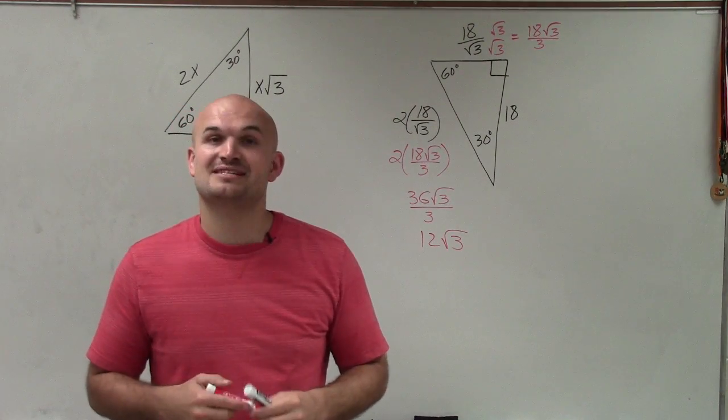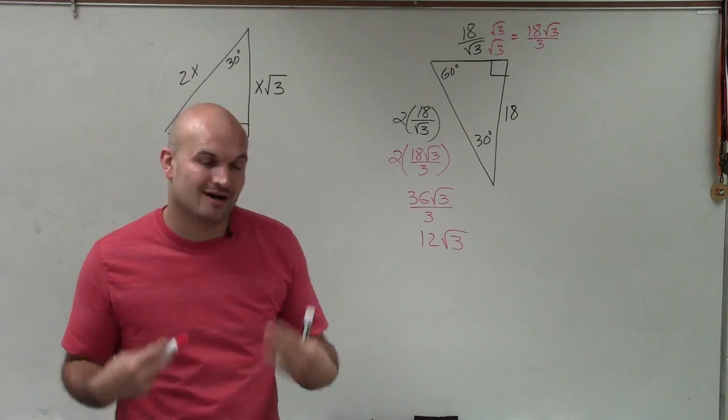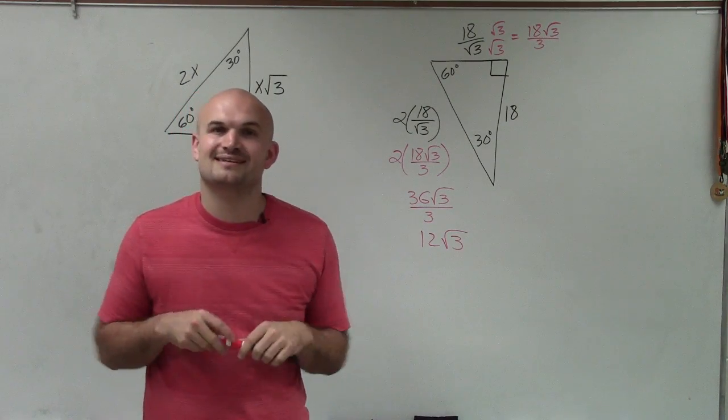Therefore, ladies and gentlemen, that is how you find the missing short leg and hypotenuse of a special right triangle, 30, 60, and 90. Thanks.